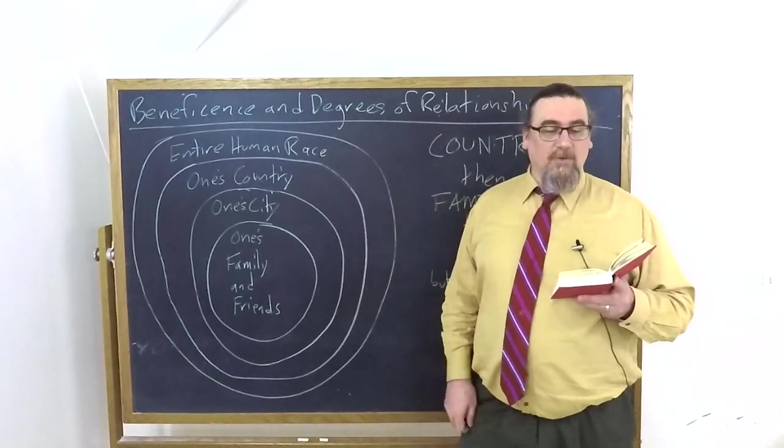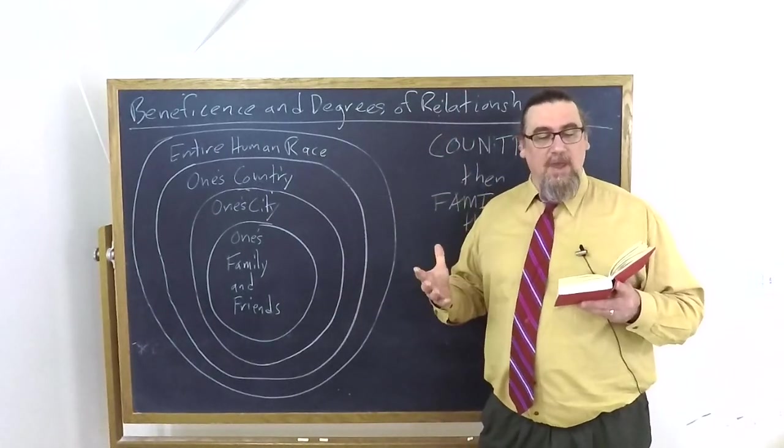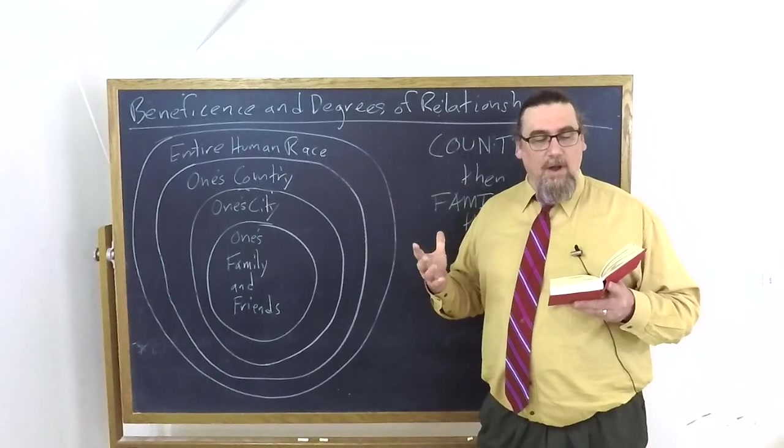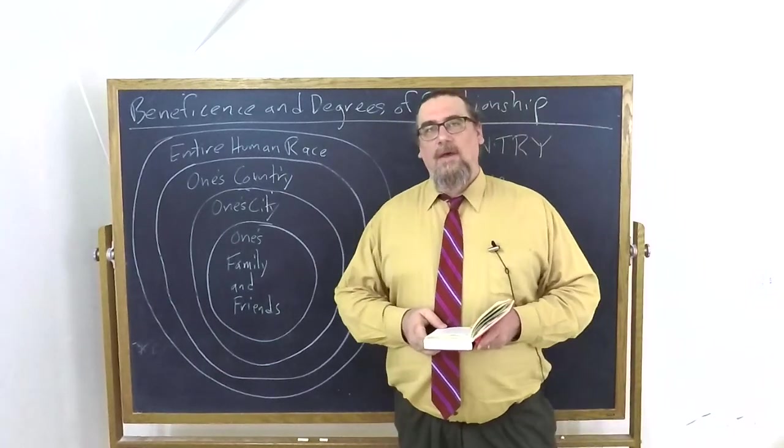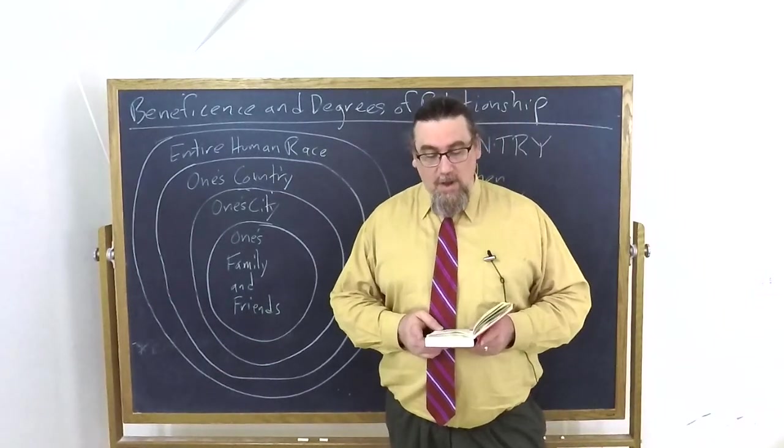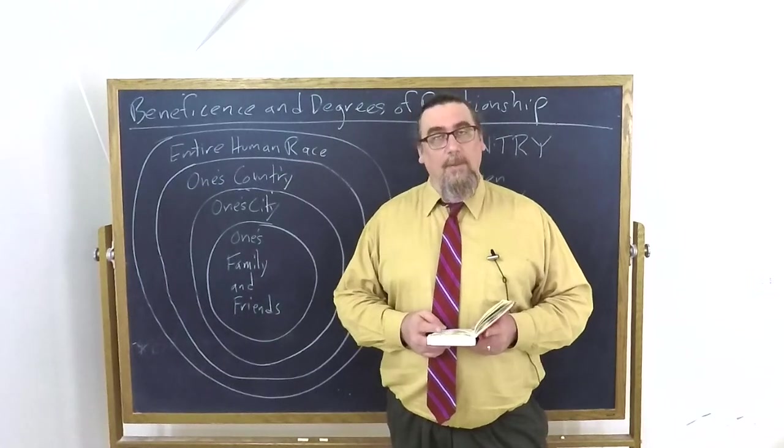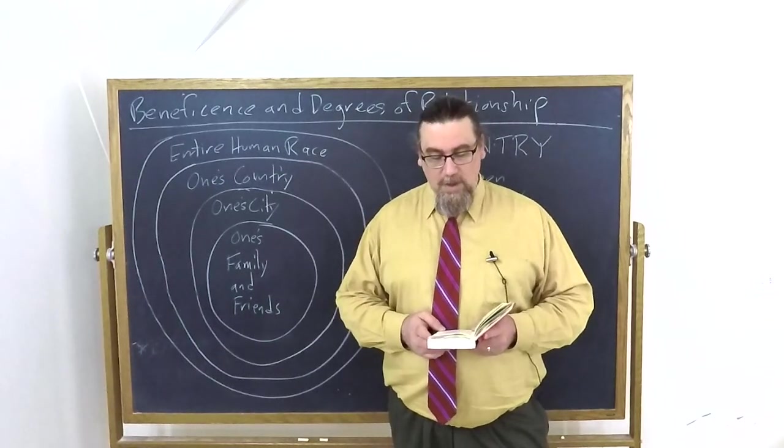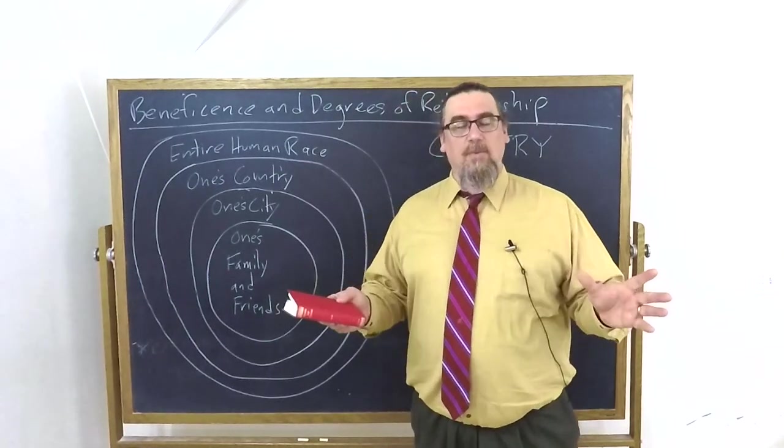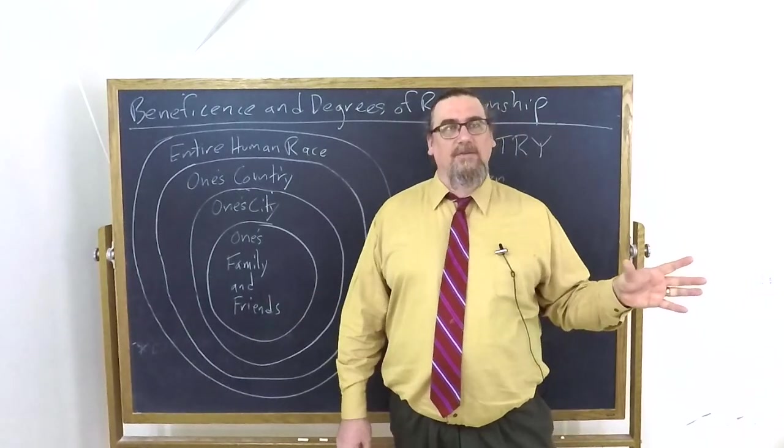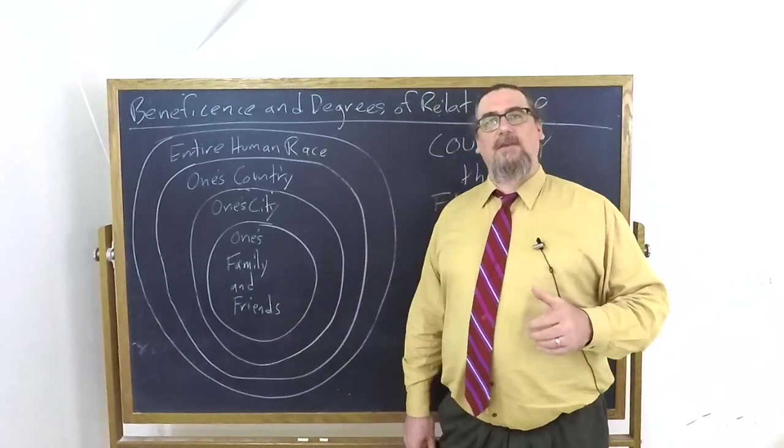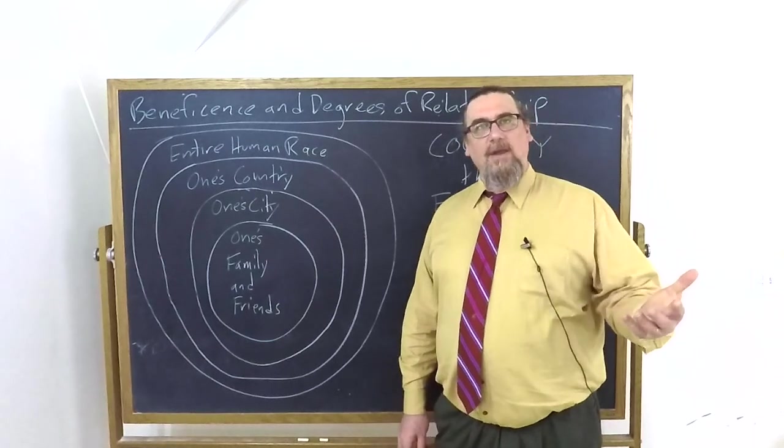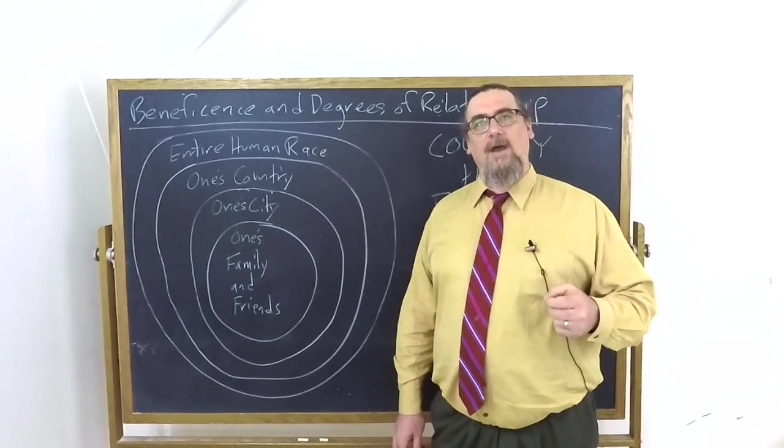So he says, this is the most comprehensive bond that unites human beings together and all to all. And under it, he says, there is a common right to all things that nature has produced for the common use of human beings. So although there can be private property and there can be laws, there are certain basic things, certain basic goods you might say of the universe that we shouldn't deprive each other of.